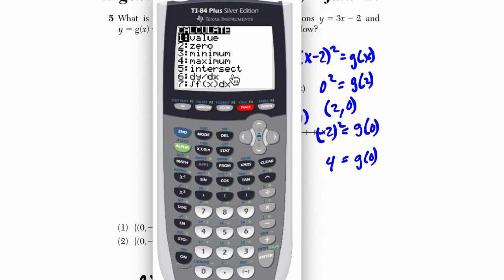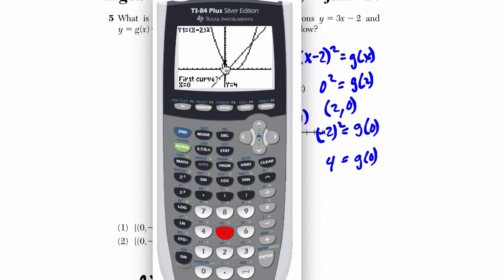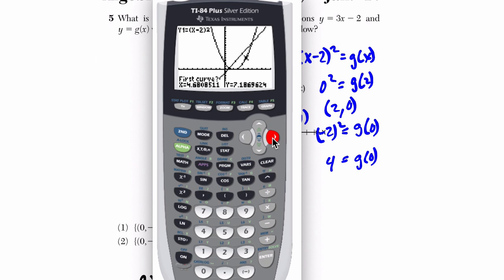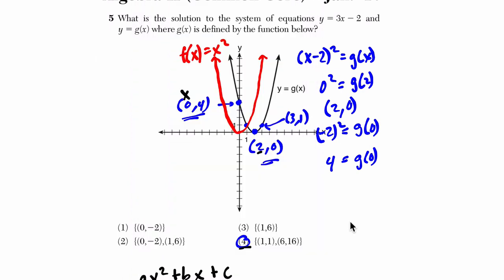I hit second trace. Choice 5 is for intersect. And I'm hovering right now here on the parabola. They're calling it my first curve. Hit enter. Then I jump to the line. I hit enter again. Kind of scroll near the intersection point. And once there's any guess, hit enter. There's my first intersection. Then I repeat the process. Second trace. Intersect. This time I'm going to go near the intersection point I want to find. And this calculator program froze. Well, if I hit enter, it would jump to the line. And then I would scroll over to the point, enter again. And I would see the next point, which is 6, 16.